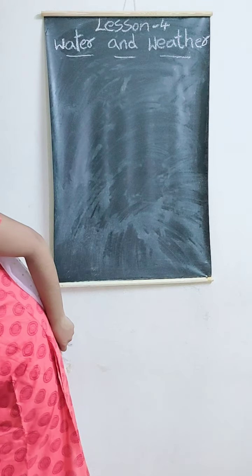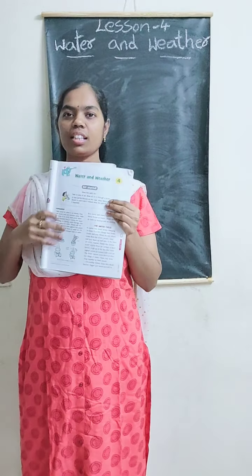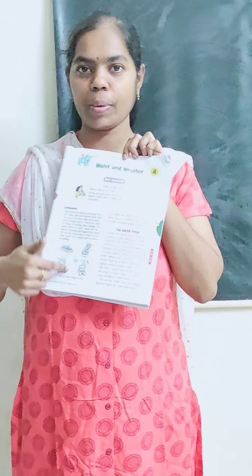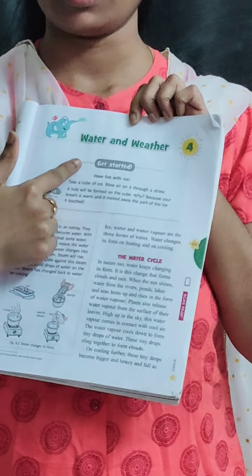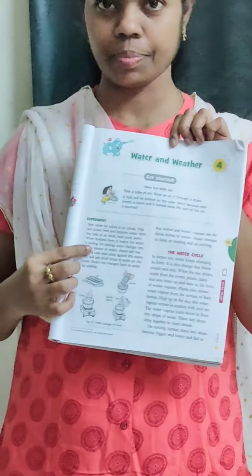What is the lesson name? Water and Weather. Take your Turn 2 Textbook and open page number 131. This page, fourth lesson. First let's learn about the water. Now I am going to ask one question: what do we know about water?